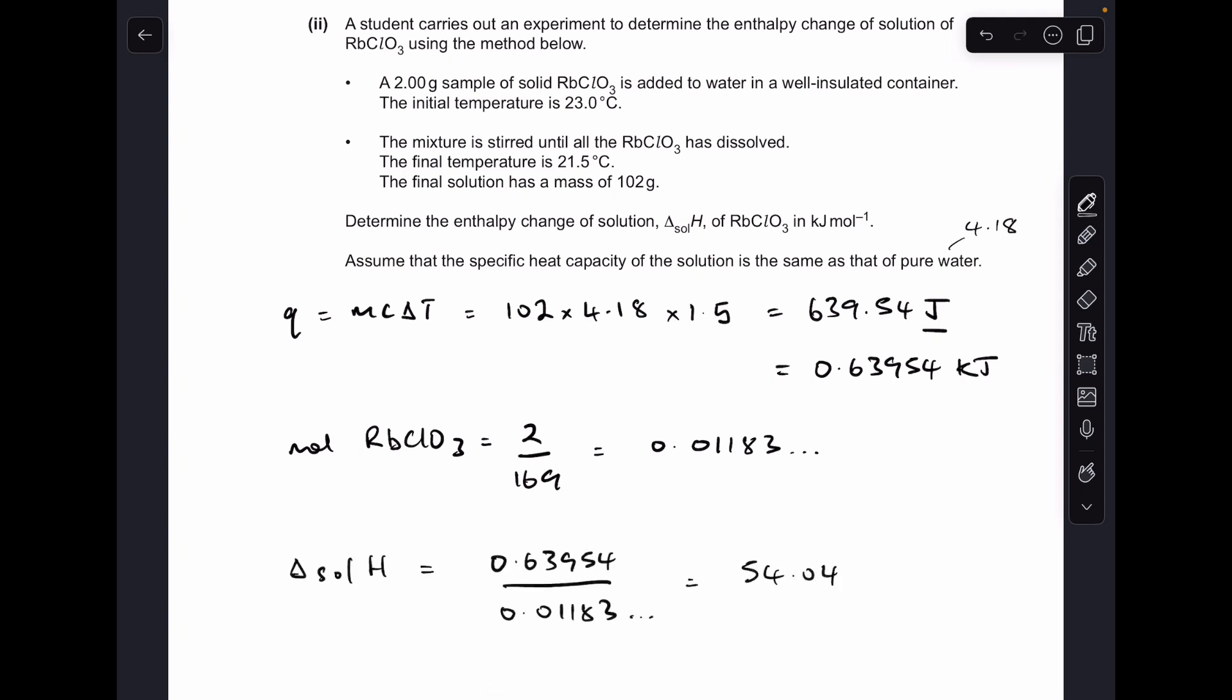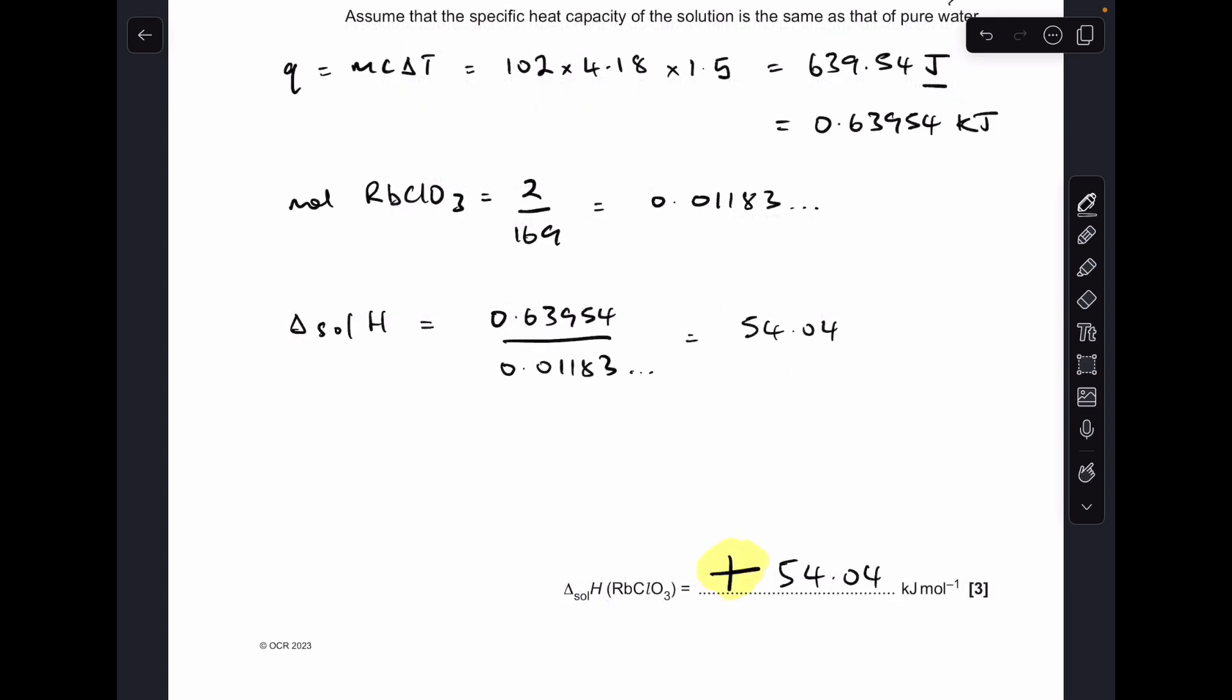So to get the delta H solution, we do the kilojoules divided by the moles. So the number is coming out as 54.04. But remember, enthalpy changes must have a sign. So because it's endothermic, it's plus 54.04.